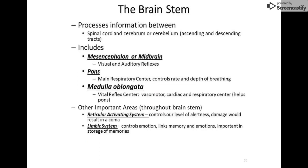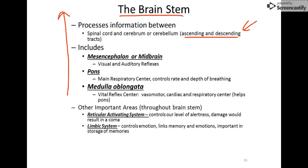As we move down the brainstem, a key thing to remember is that these areas have ascending and descending tracts, just like your spinal cord. Some information simply passes right through — coming from the spinal cord, it goes right by the medulla, pons, midbrain, through the diencephalon, all the way to the thalamus, which sorts and sends it to the right area. But within those areas there are also some specific functions.